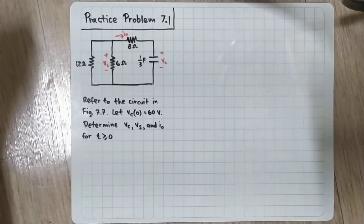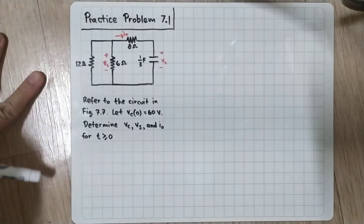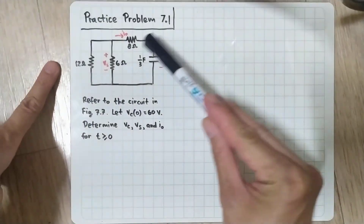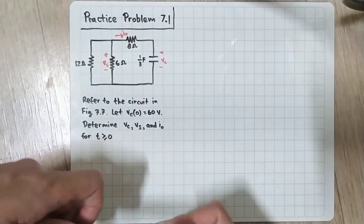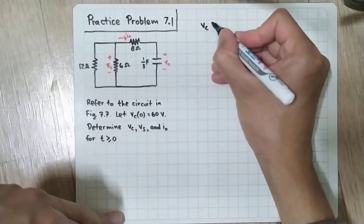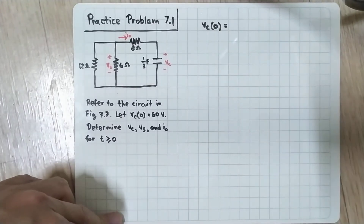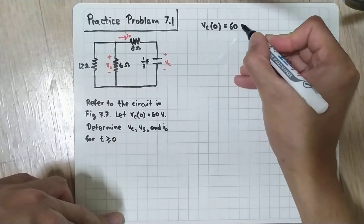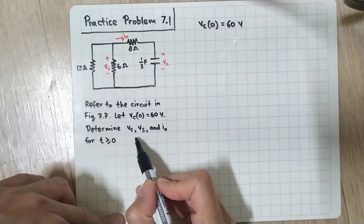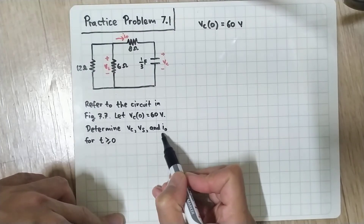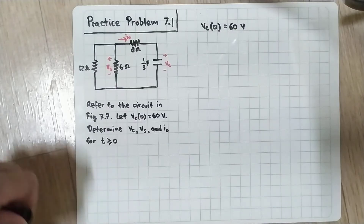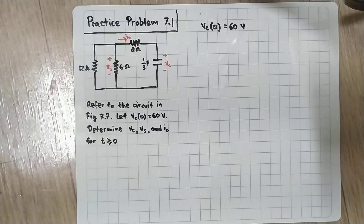We are going to solve practice problem 7.1 from Sadiku's book. The question refers to the circuit in figure 7.7, where VC(0) is equal to 60 volts — that is our initial condition for the capacitor. We need to determine VC, VS, and I0 for t greater than or equal to zero.